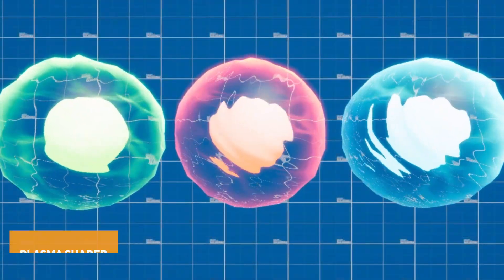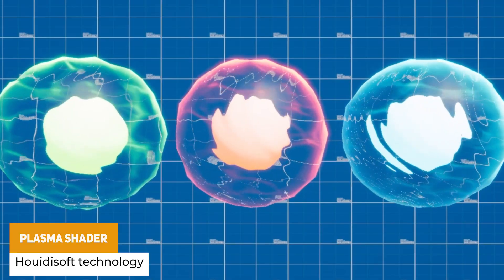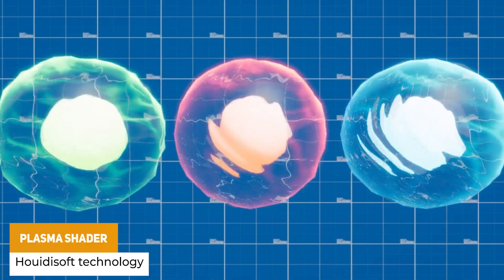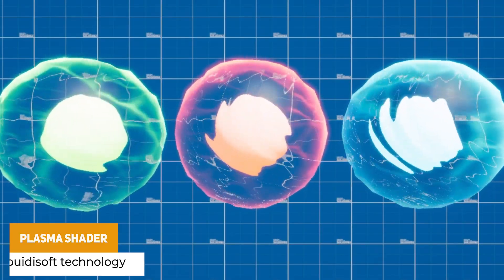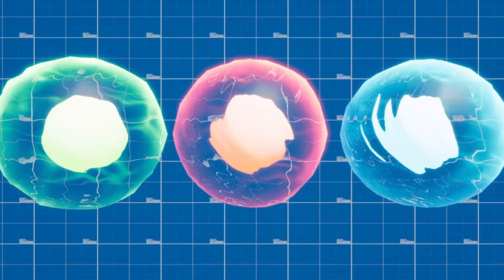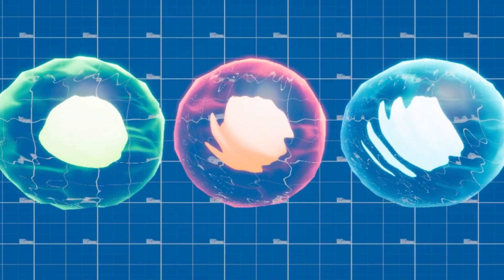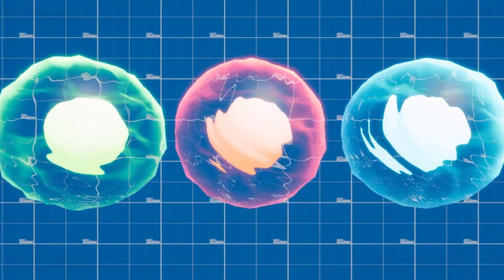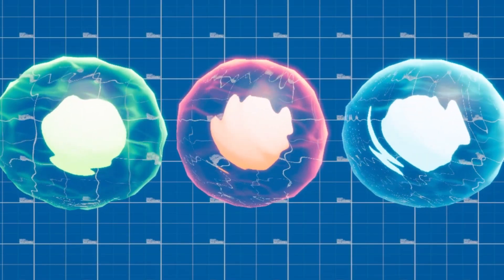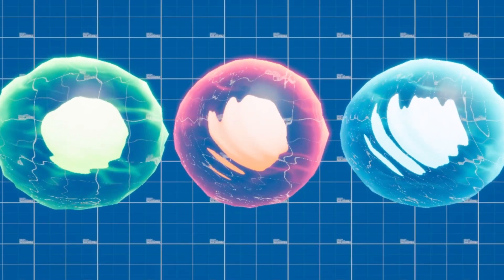The next one is something called the Plasma Shader, and this could be ideal for sci-fi weapons, magical effects, animated backgrounds and loads of different stuff. You can customize the color, the intensity and the speed, and you can use this across 2D or 3D.